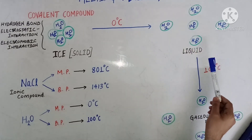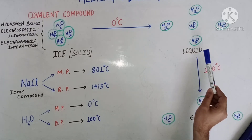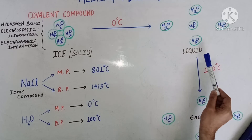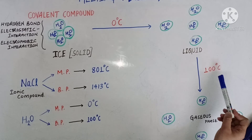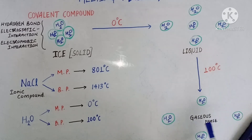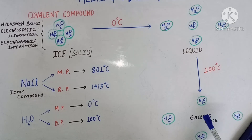This is what actually happens during transformation of a substance from one state to another. If we boil or heat this water molecule further, the liquid water gets converted into its gaseous or vapor form. This takes place at 100 degrees Celsius. At 100 degrees Celsius, again the weak interactions between the water molecules get broken down and the water molecules again separate from each other at a quite measurable distance.